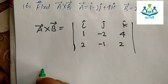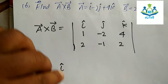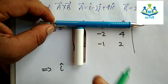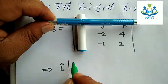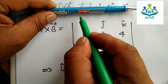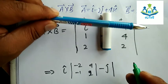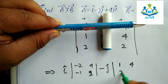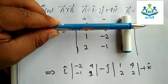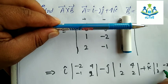To find the i-th component, we blank out the first column and first row, leaving the sub-matrix: (−2, 4; −1, 2). Then minus j component uses sub-matrix (1, 4; 2, 2). For the k component, we use sub-matrix (1, −2; 2, −1).